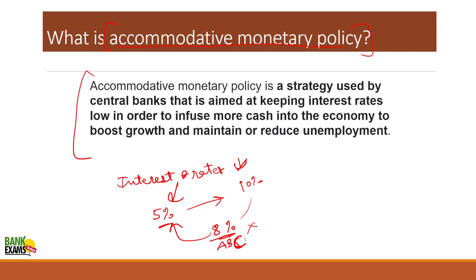As consumer loans increase, people spend more; as business loans increase, employment increases and production rises — the overall economy runs faster. Accommodative monetary policy is a strategy aimed at keeping interest rates low to infuse more cash into the economy, boosting growth and reducing unemployment.